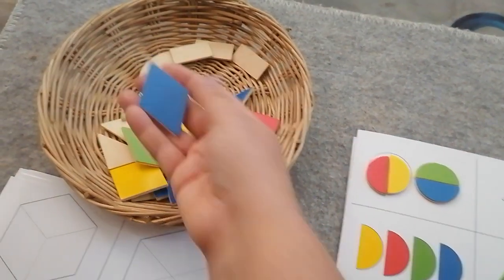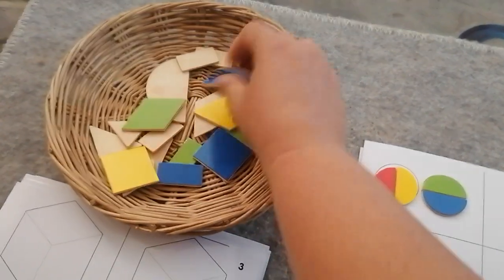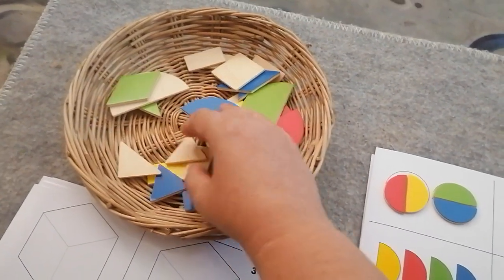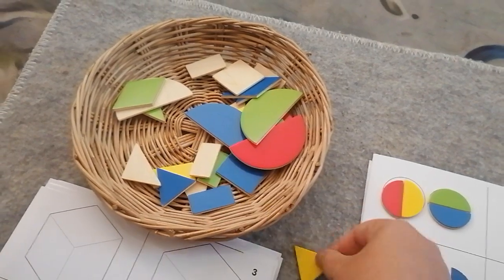There's the diamonds, like this, and then where are the triangles? There's a triangle, but that's a yellow one.